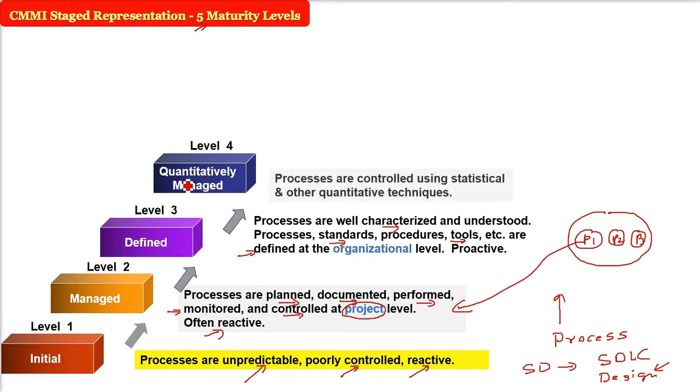Level four is quantitatively managed. Now we talk about numbers. If you're at level three, you've already attained levels one and two. At level four, everything from previous levels is done, plus we have statistical and quantitative techniques. For example, in software, you're estimating using the COCOMO model, scheduling, and doing earned value analysis. You have numbers.